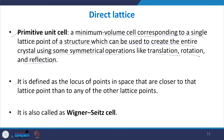Another way to define the primitive unit cell is as the locus of points in space that are closer to that lattice point than to any other lattice point. Suppose we choose one point and want to create a primitive unit cell around it - it will be the locus of all points closer to that particular lattice point than to any other. This kind of cell is called the Wigner-Seitz cell, named after the scientists Wigner and Seitz who discovered and proposed this idea.